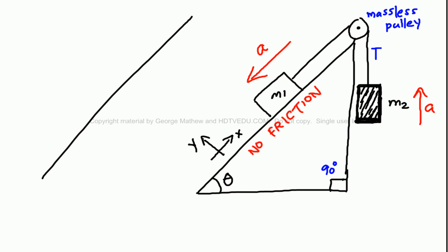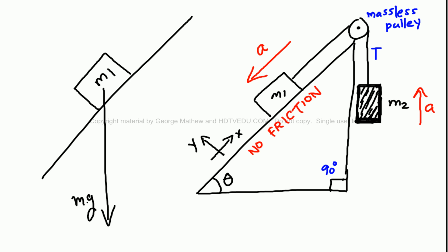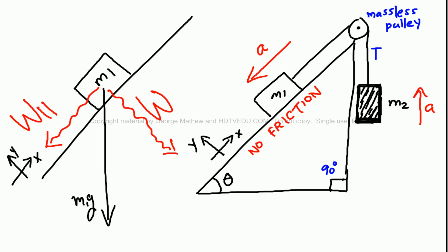Let us isolate mass M1. Here is mass M1, and we have the gravitational force M1g acting vertically down. We need to resolve this gravitational force into a parallel component and a perpendicular component — W parallel and W perpendicular. It is accelerating down, and we also have tension to the right. Tension is a pulling force; it always pulls away from the object.